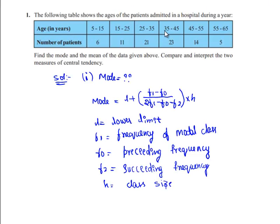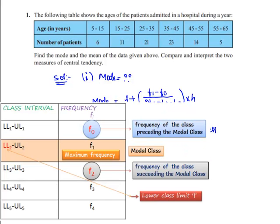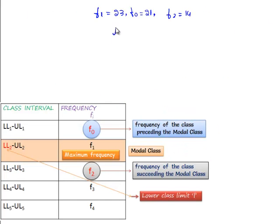Here the modal class is 35 to 45, so the lower limit is 35. And class size H is the difference between the class intervals, that is 10.